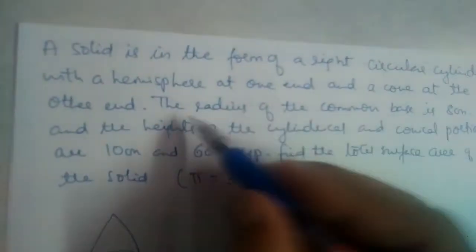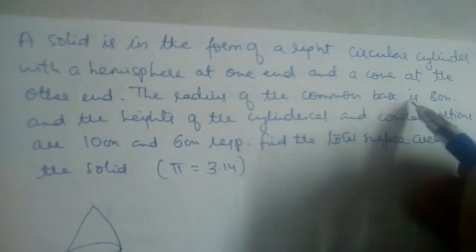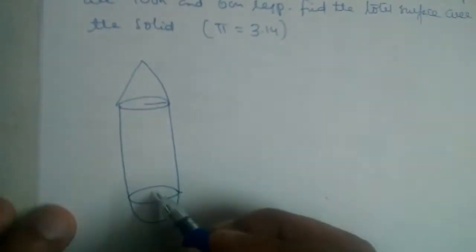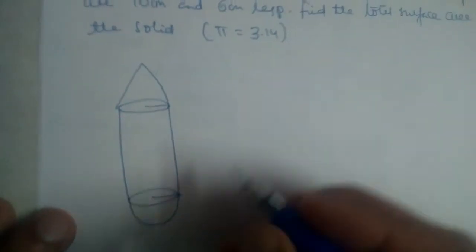The radius of the common base is 8. The radius will be same for cone, for cylinder and for hemisphere also.